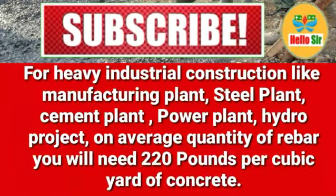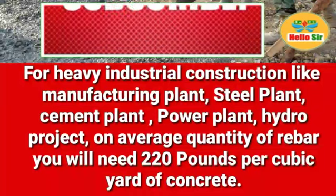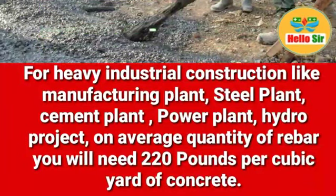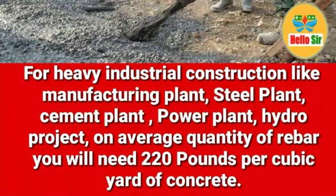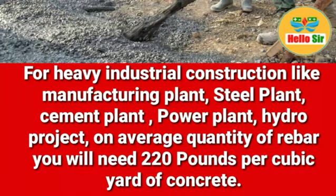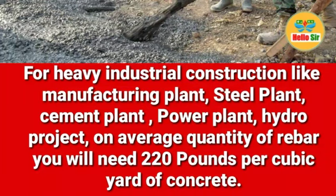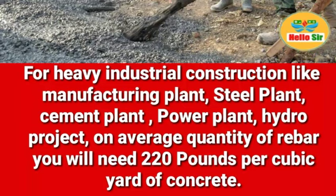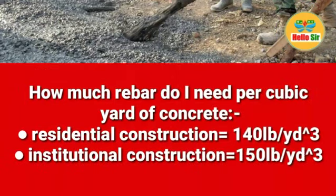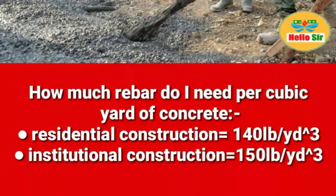For heavy industrial construction — such as manufacturing plants, steel plants, cement plants, power plants, and hydro projects — on average the quantity of rebar you will need is about 220 pounds per cubic yard of concrete.